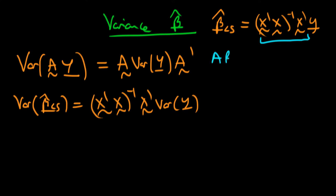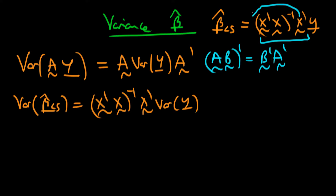To find A transposed we use the result that for two matrices multiplied together, A times B, the transpose of that product is B transposed times A transposed — the order inverts. So when taking the transpose of X prime X to the power minus one times X prime, the X prime comes out to the front, and taking the transpose of X transposed just gives us back the original matrix X.